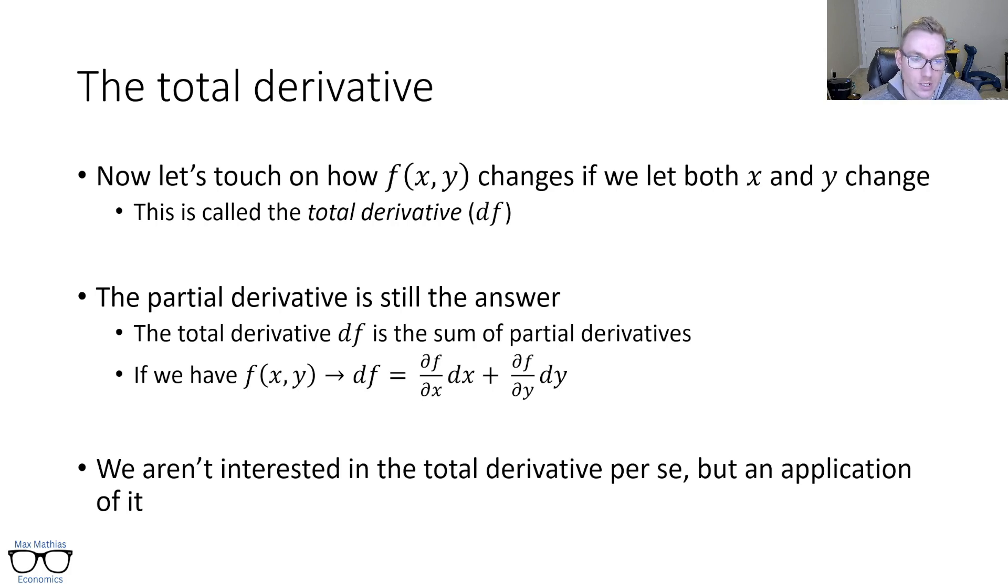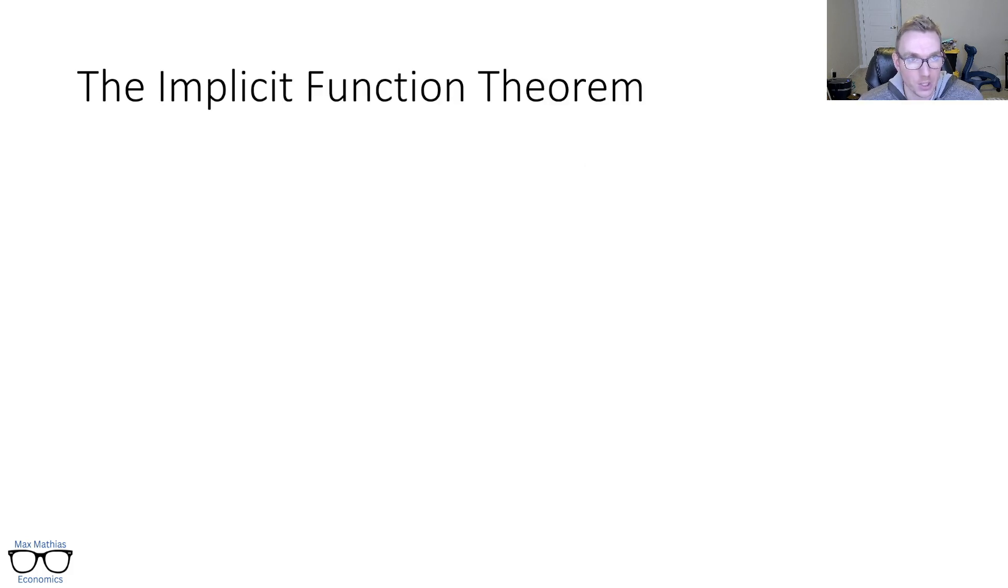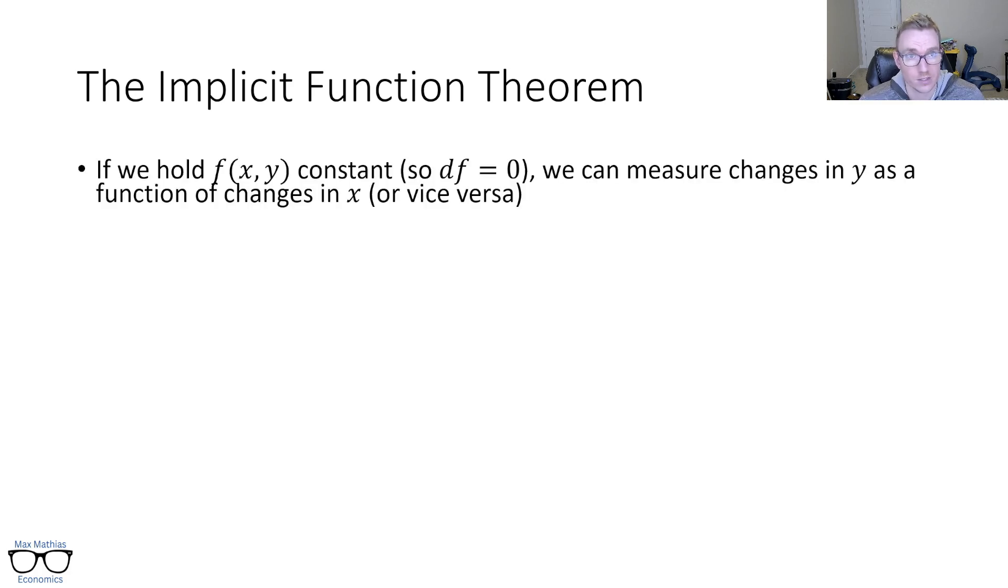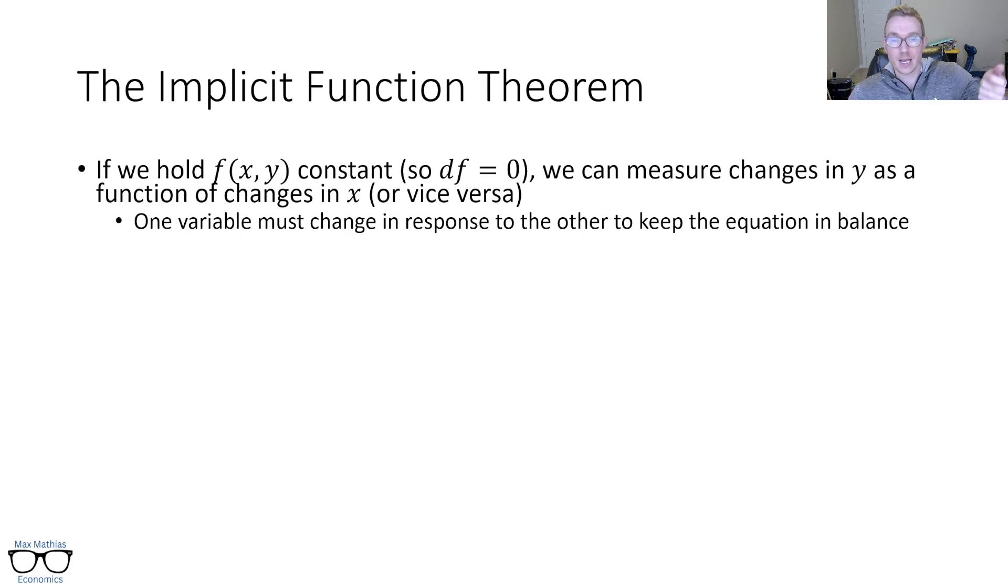What's interesting though is that we aren't interested in the total derivative on its own, but there is an application of it that we are interested in, and that application is called the implicit function theorem. So what we're going to do here is if we hold this function constant—so if we don't let it change, so its total derivative would be zero—we can then measure changes in y as a function of changes in x, or vice versa. The thought process behind this is if the function itself isn't changing, as x changes, y has to change in response to keep the equation in balance, or vice versa. If we're not letting the function change, if y changes, then x has to change in response again to make sure that the overall value of the function doesn't change. So implicitly, y is a function of x. If x changes, y has got to change in response to keep that total derivative equal to zero.